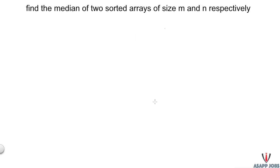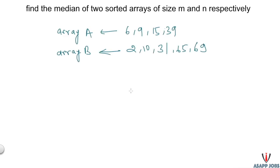Welcome to SF Jobs Lab, where we bring you all possible solutions to interview questions including the most efficient one. Today we will see how to find the median of two sorted arrays of size m and n. Let's understand this question with an example: we have elements 6, 9, 15, and 39 in array A, and 2, 10, 31, 65, 69 in array B, and these arrays are already sorted.